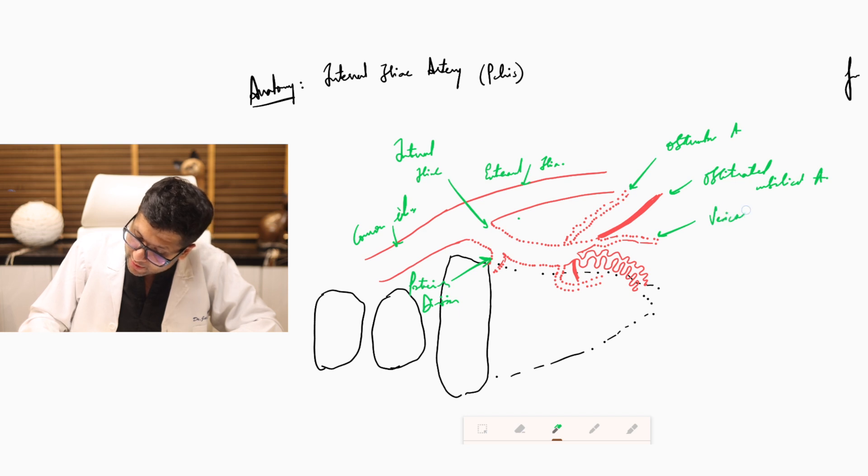This is your vesicle artery. This is the uterine artery common branch. This is your pudendal artery, again a very common branch, and a little infrequent branch which I may call the middle rectal artery.